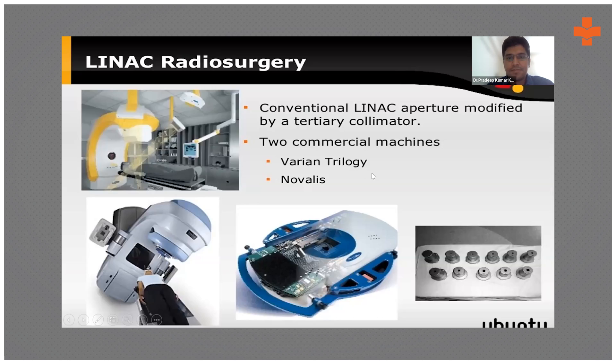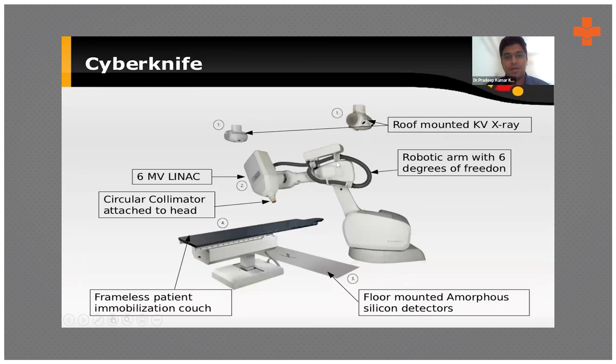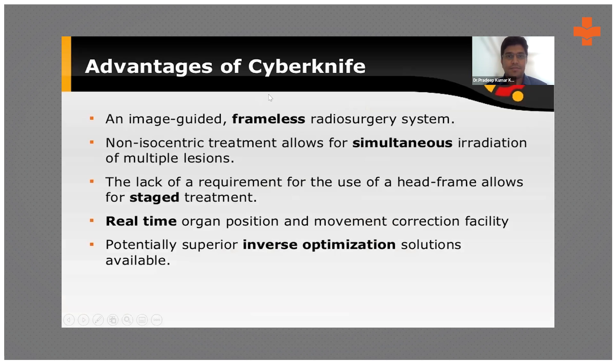This is the CyberKnife: a 6 MV linac mounted on a 6-degree-of-freedom robotic arm. It can move in any angle and can reach over a thousand nodes surrounding a particular treatment point, providing sub-millimeter accuracy and delivering high doses with very few side effects. Roof-mounted X-ray sources continuously generate imaging every 15 seconds to track the movement of the treatment area.